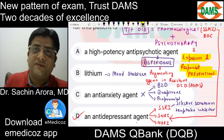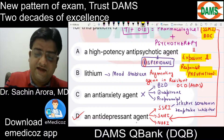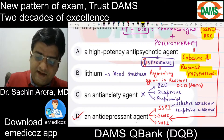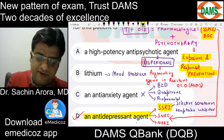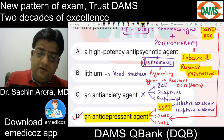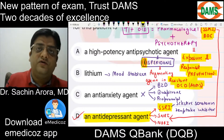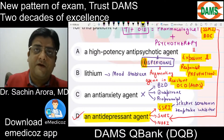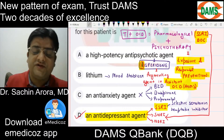Via this question, here are some key exam points: Psychotherapy of choice for OCD — ERP (Exposure and Response Prevention). Drug of choice for OCD — SSRI. SSRI belongs to antidepressants. Augmenting agent in resistant OCD — risperidone. So this is how we approach such a question.